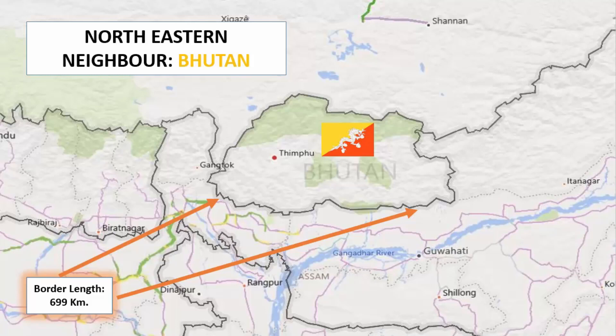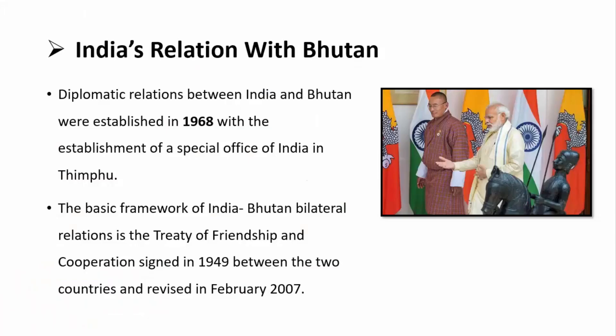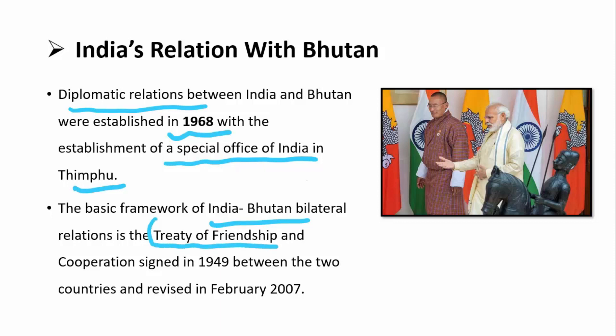Moving to the northeastern region, the next country is Bhutan. India shares its borders with Bhutan with a border length of only 699 km. Bhutan has always been a peaceful country and there are a lot of good ties. Diplomatic relations started with Bhutan with the establishment of a Special Office of India in Thimphu, the capital of Bhutan, in 1968. The basic framework for India-Bhutan bilateral relations began after the Treaty of Friendship and Cooperation signed in 1949, which was revised in February 2007.